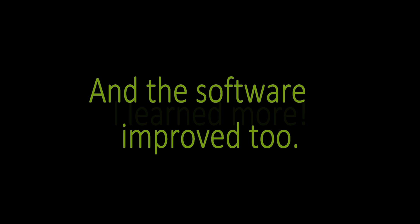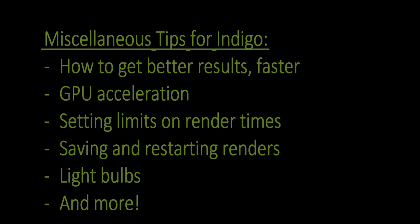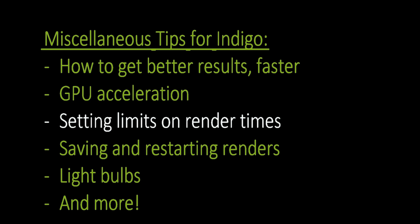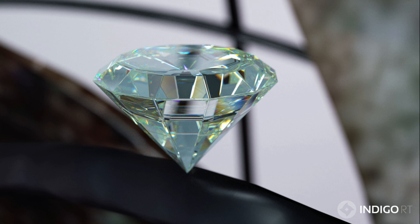Shortly after publishing Part 1, I learned a few more things I simply hadn't gotten around to learning. Also, Part 1 was made with a beta version of iClone and some parts weren't working at the time. So my update and extension to Part 1 will be called Part 3 of 2 — Updates to Part 1. I'm also excited about a miscellaneous collection of tips on using Indigo, covering how to get better results faster, graphics card acceleration, setting limits on render times, saving and restarting renders, light bulbs, and more. Until then, I'll be seeing you on the forums, and happy rendering!